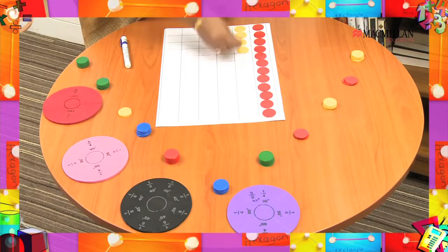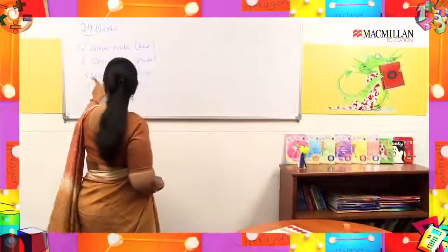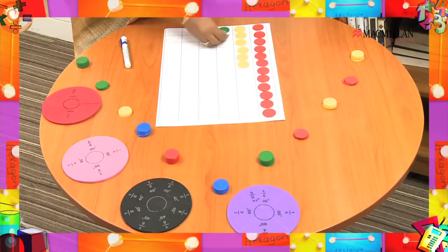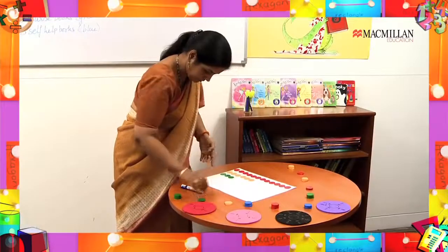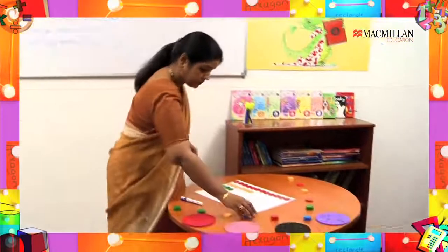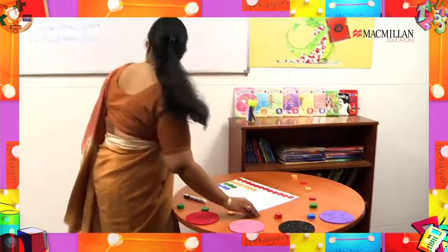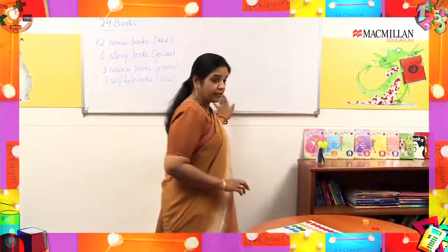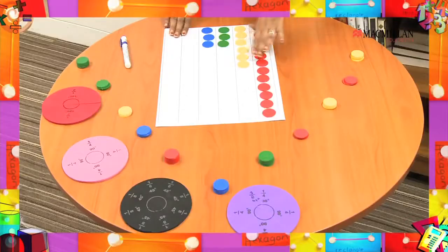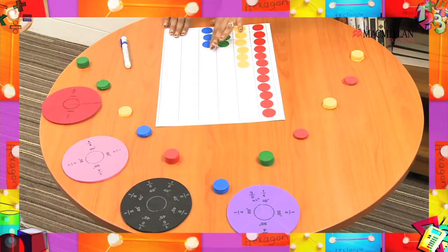Next I have three course books and I am going to represent them by green counters. And I have three self-help books too, which I am representing by blue counters. So what have I done? I have organized my 24 books into 12 comic books, six story books, three course books, and three self-help books on this bar graph.